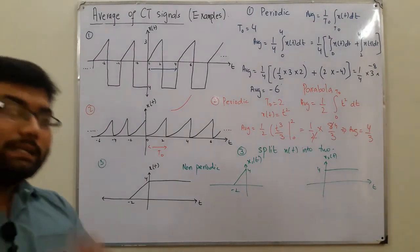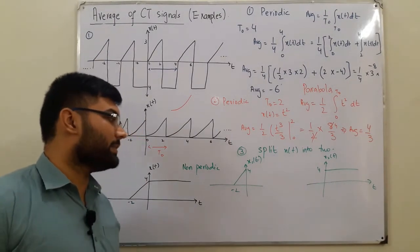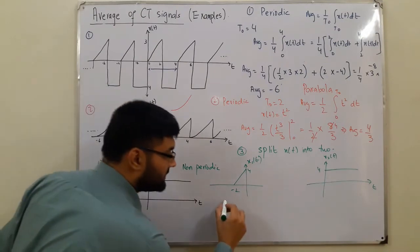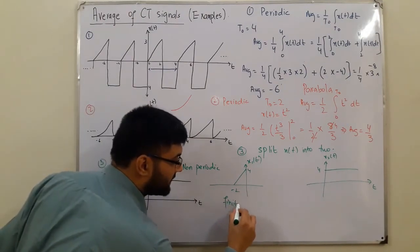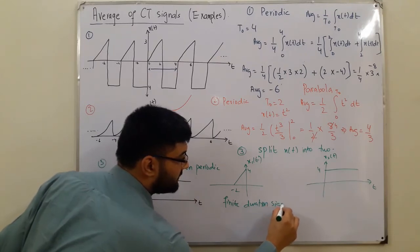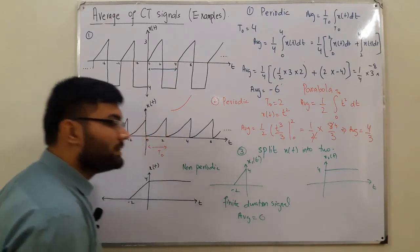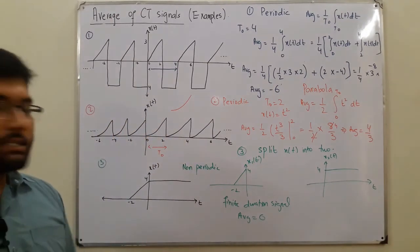Now why do I do this? I did this to make some simplifications. So have a look at the first part. This is what? This is a finite duration signal, finite duration signal. And we've already seen the area, the average for a finite duration signal would be 0, isn't it so?